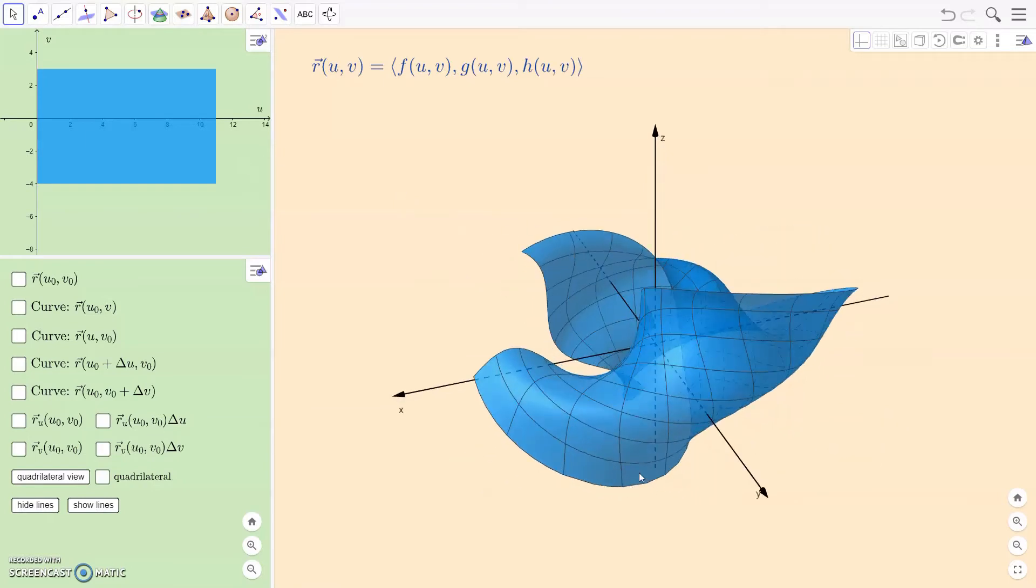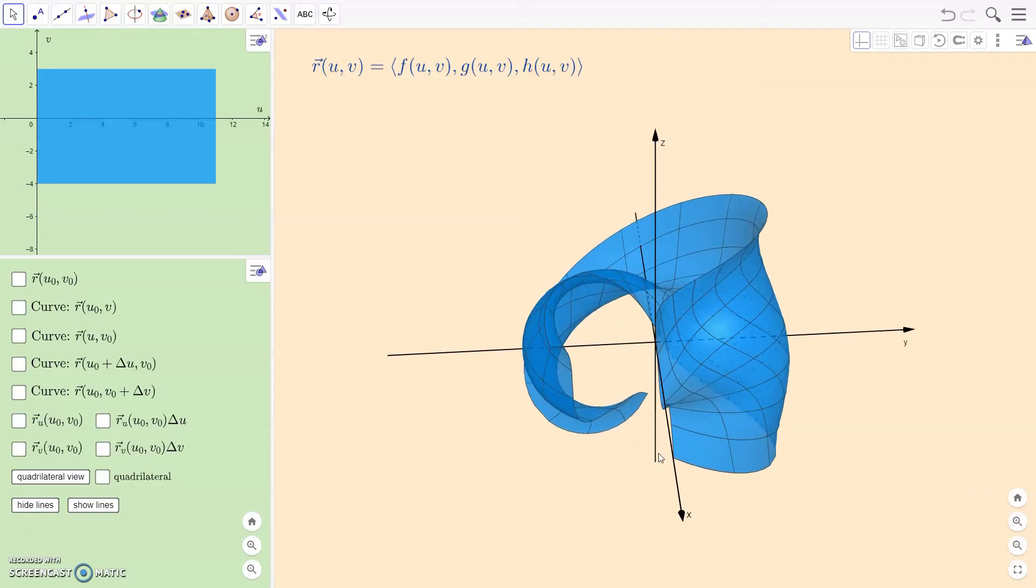All right, so let's start thinking about how to break this up into pieces. Now, first of all, notice the black lines that GeoGebra already draws on the surface. Where exactly are those black lines drawn? Well, GeoGebra is doing something. It's drawing black lines at fixed U values or fixed V values,